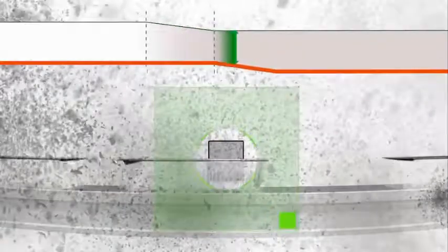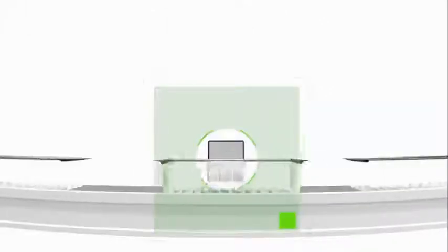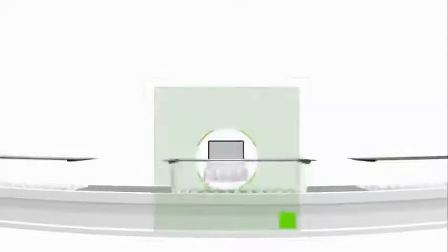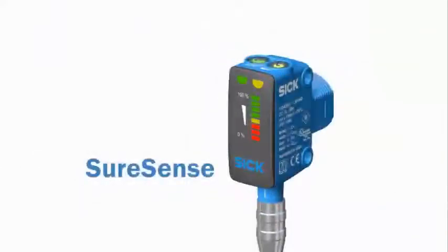This AutoAdapt technology monitors the contamination and automatically adapts the switching threshold as contamination occurs. After cleaning the lens, the sensor automatically readjusts the switching threshold as the contamination is removed. This greatly increases your machine uptime and reduces maintenance costs.